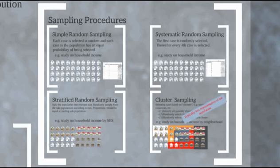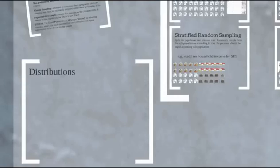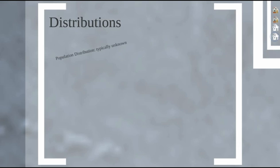Those are our four basic probability sampling procedures. Now we want to talk about distributions. You may wonder why distributions are important for samples — it's because the population distribution is typically unknown in the social sciences. We usually don't know the mean and standard deviation, the central tendency, and dispersion of the population.